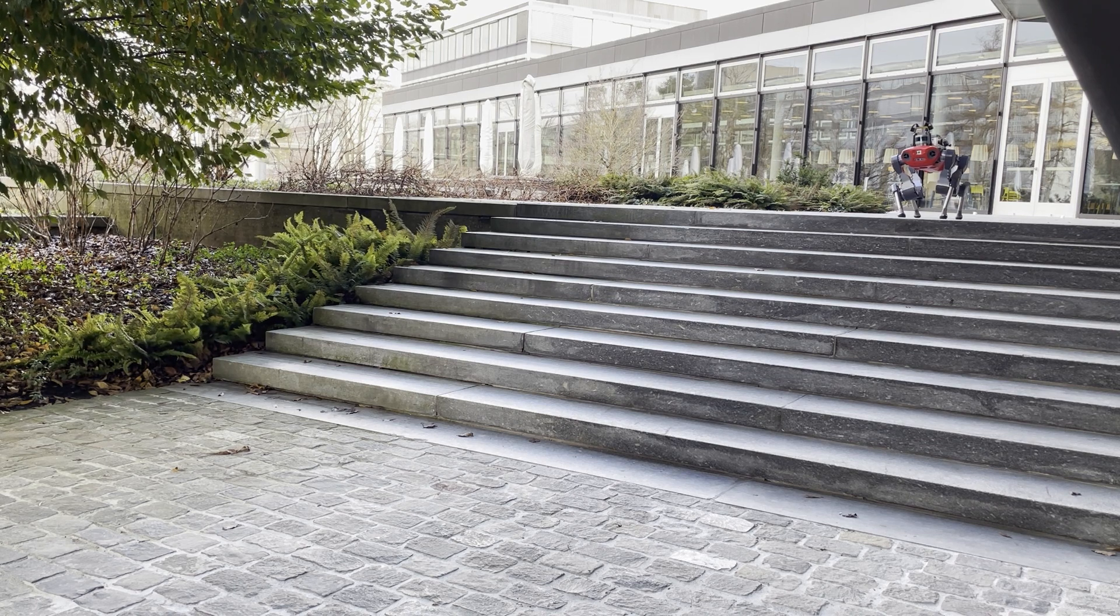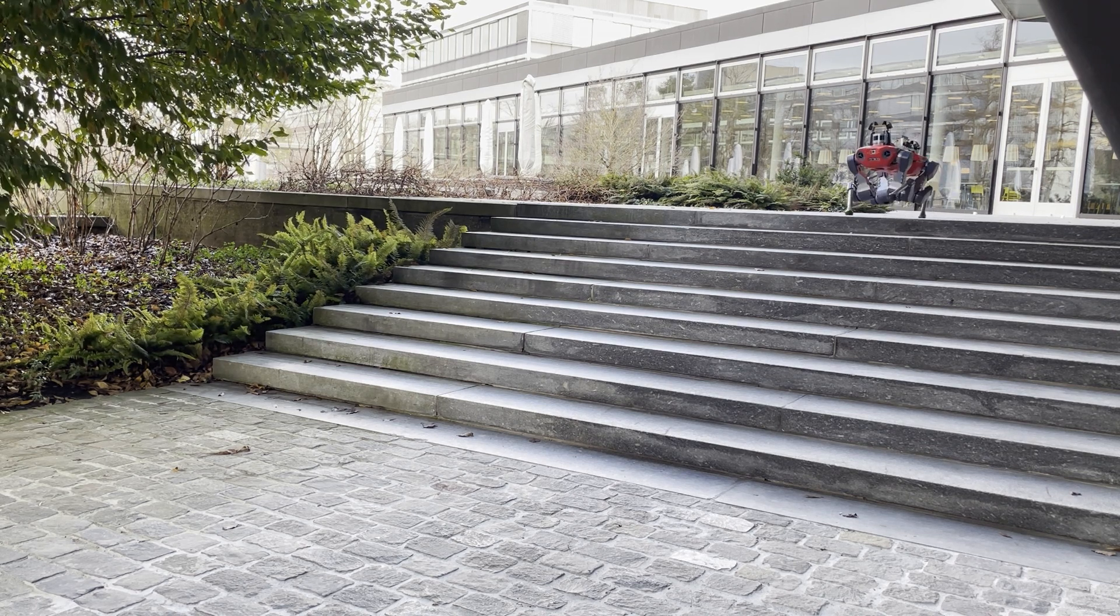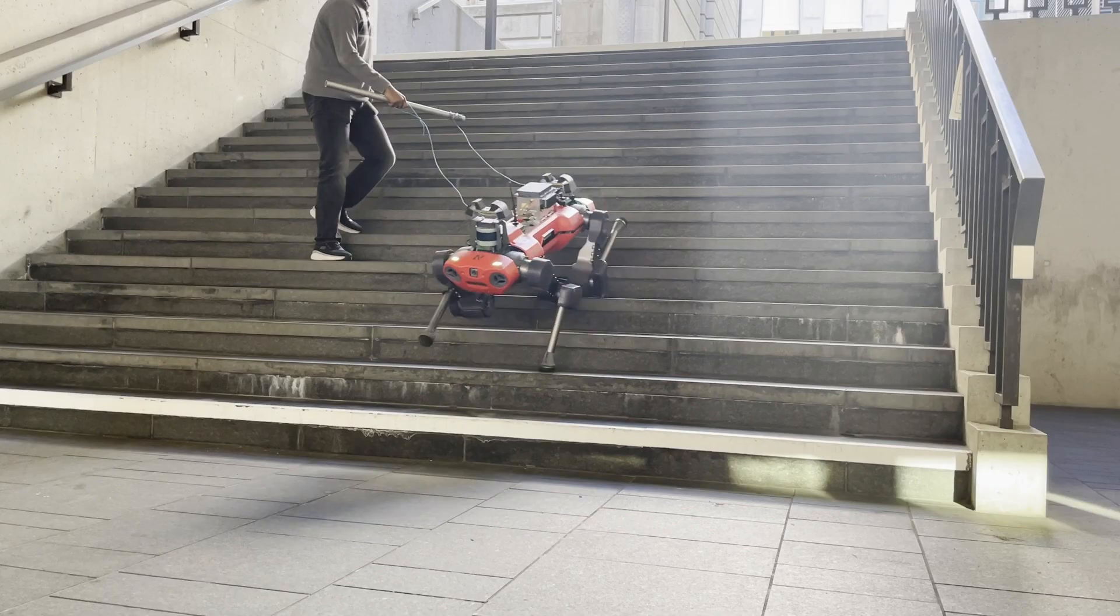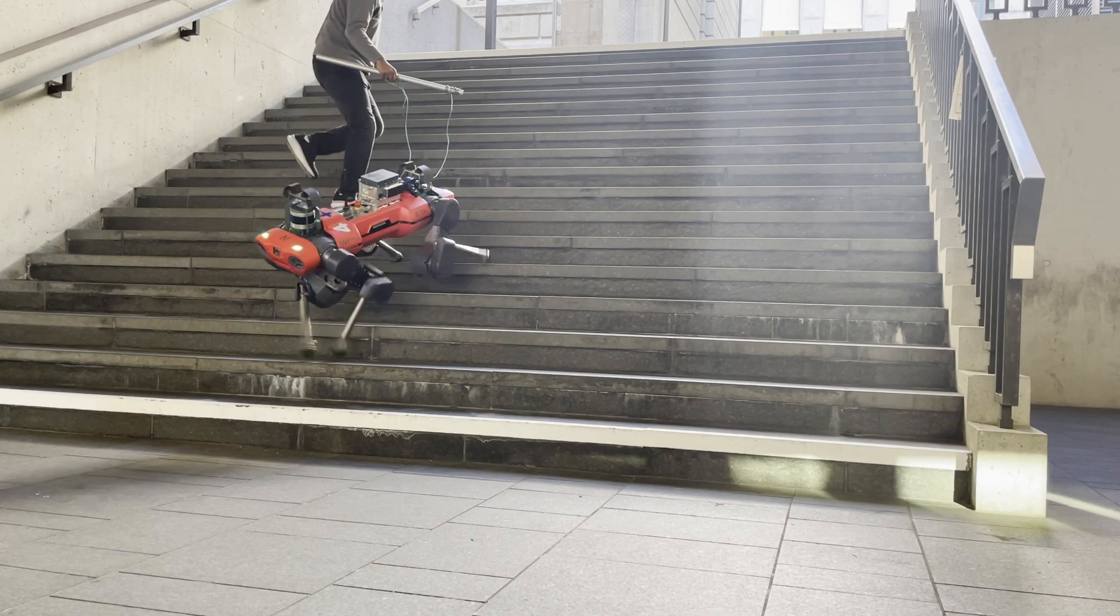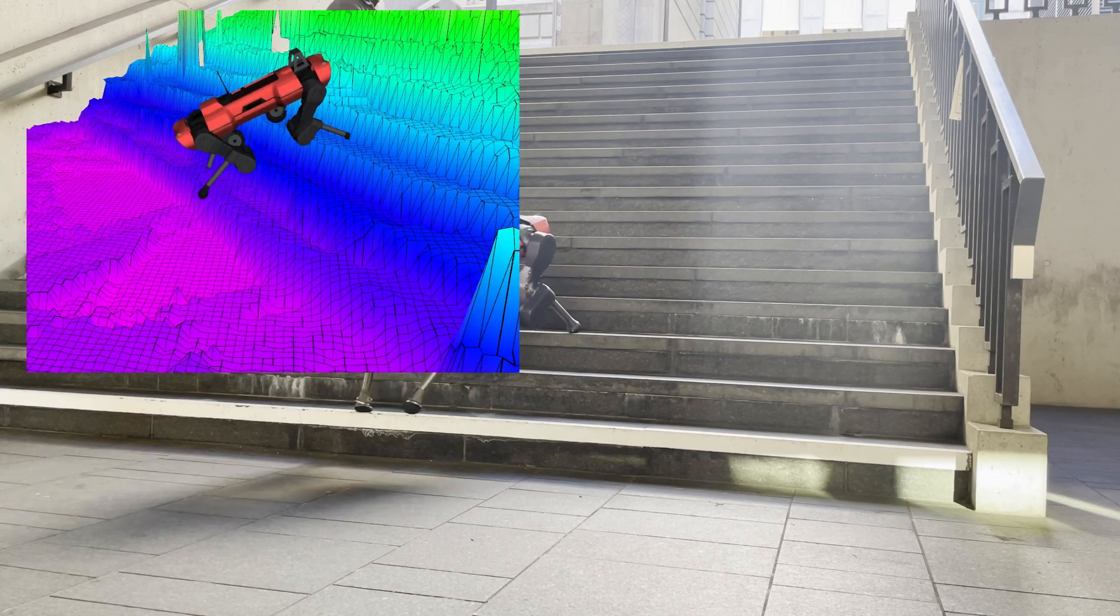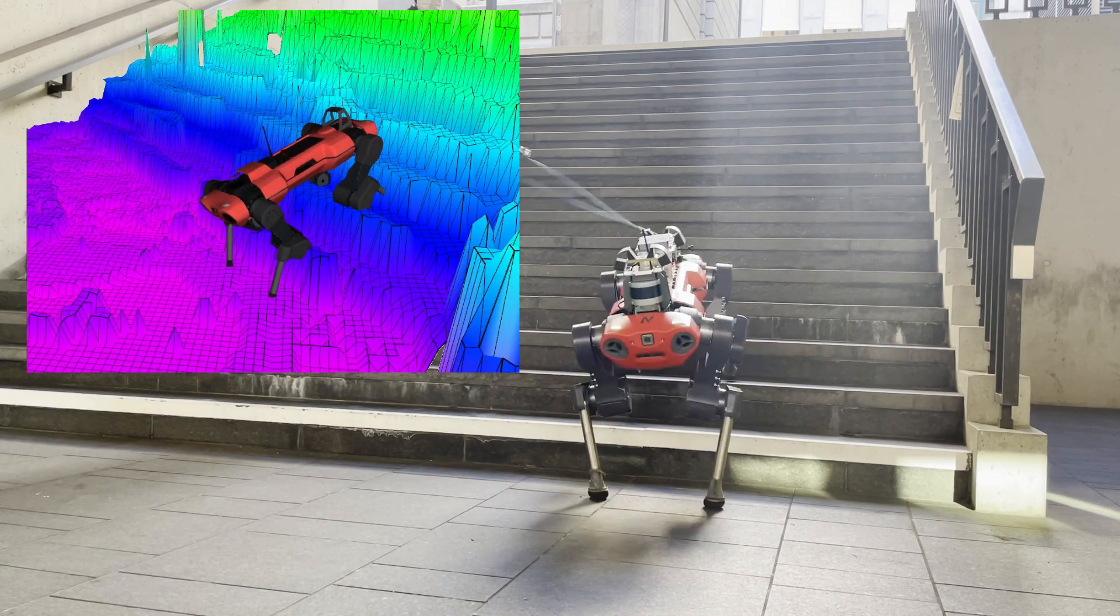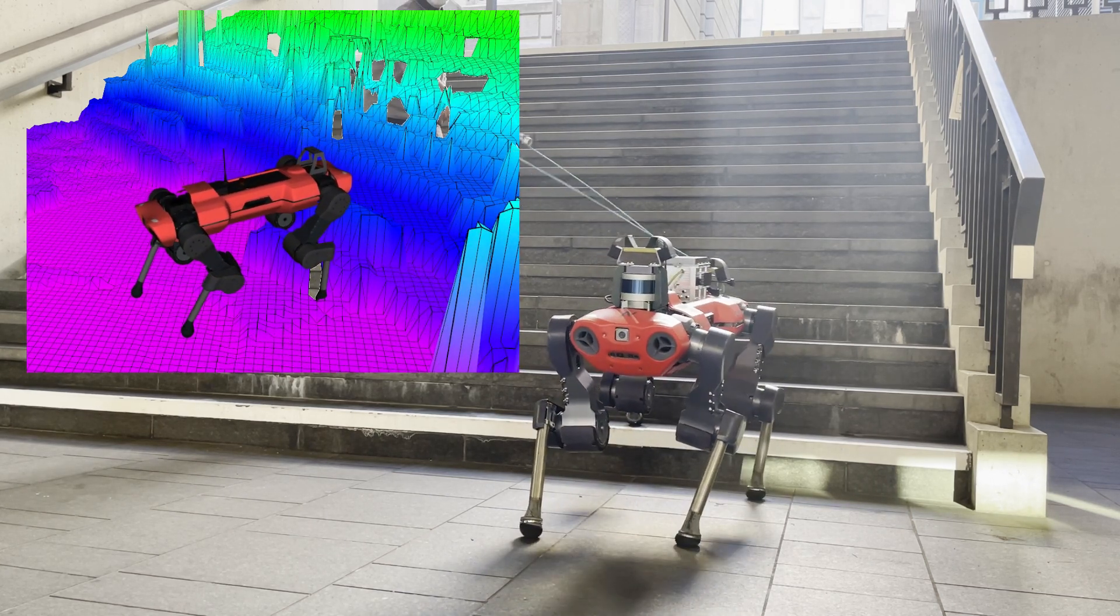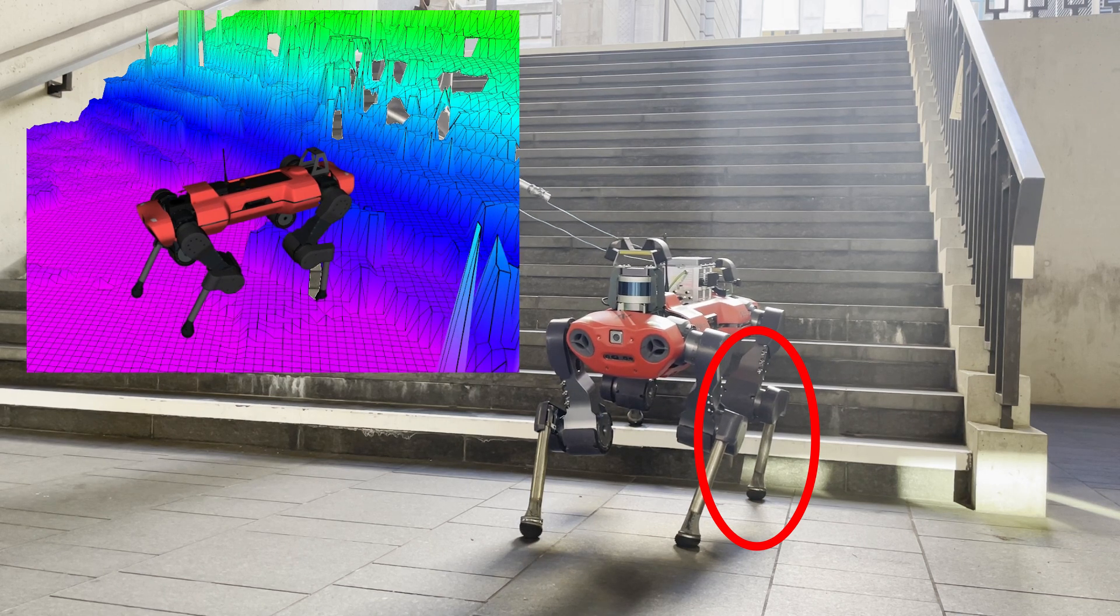And last but not least, onboard computing power is reduced, which limits the kind of neural networks we can deploy on the robot for reconstruction. The current approaches on the robot, such as elevation mapping, suffer from the drift, which produces unclean reconstructions as can be seen here. Since the policy directly uses the height estimate as input, this results in erratic behavior.